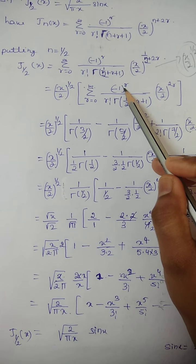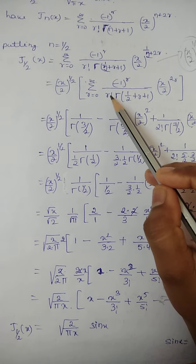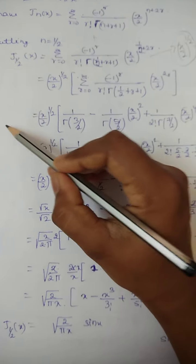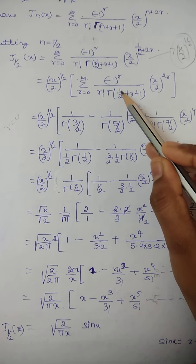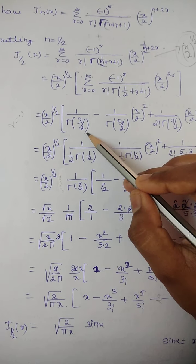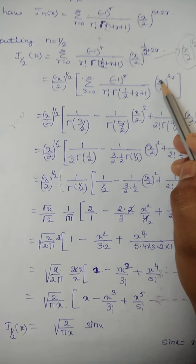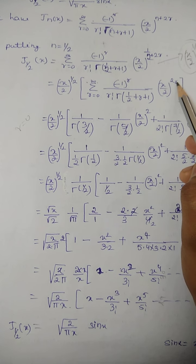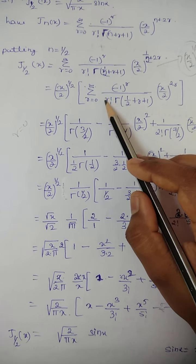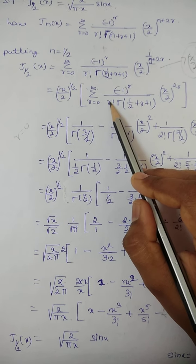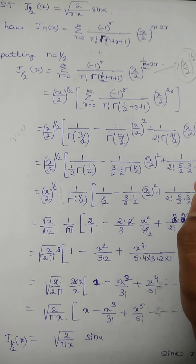Now let us apply the summation. When r = 0: (-1)^0 divided by 0! · Γ(1/2 + 0 + 1) = Γ(3/2), and (x/2)^0 = 1. When r = 1: (-1)^1 divided by 1! · Γ(1/2 + 1 + 1) = Γ(5/2), and (x/2)^2.